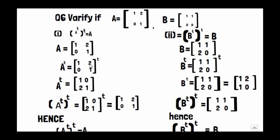A^T is [1, 0; 2, 1]. Now we take the transpose of A^T again. The rows [1, 0] and [2, 1] of A^T become columns, giving (A^T)^T equals [1, 2; 0, 1].